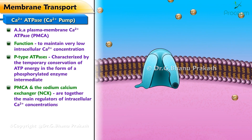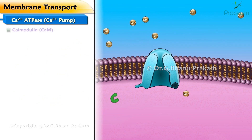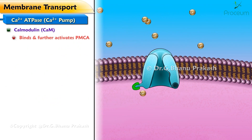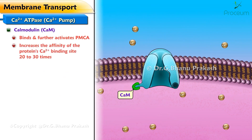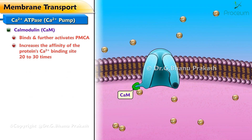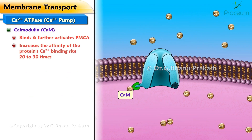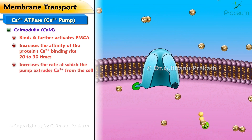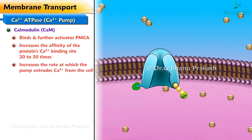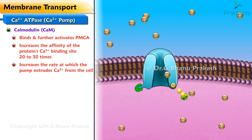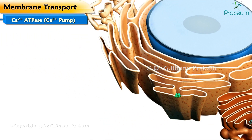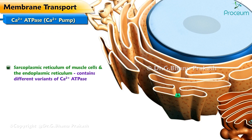The PMCA and the sodium-calcium exchanger (NCX) are together the main regulators of intracellular calcium concentrations. Calmodulin binds and further activates the PMCA, increasing the affinity of the protein's Ca2+ binding site 20 to 30 times. Calmodulin also increases the rate at which the pump extrudes calcium from the cell, possibly up to tenfold.